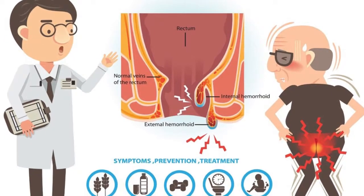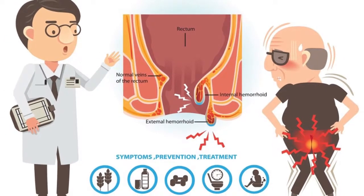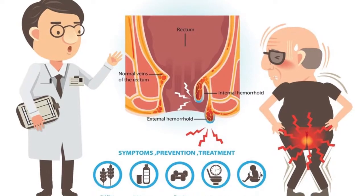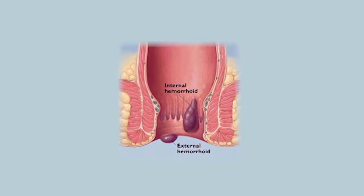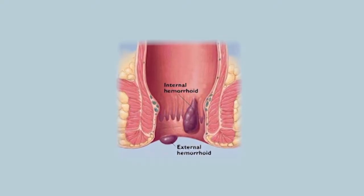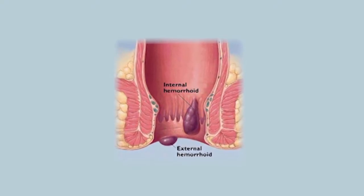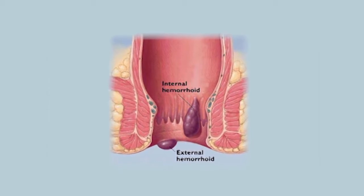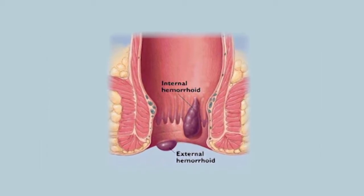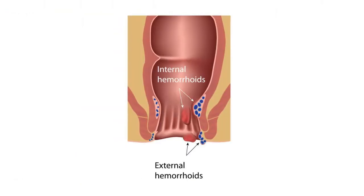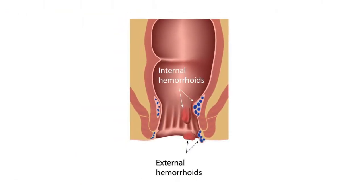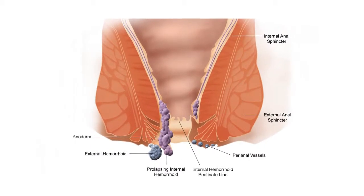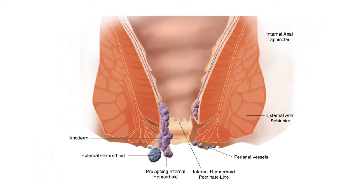Sometimes hemorrhoids swell when the veins enlarge and their walls become stretched, thin, and irritated by passing stool. Hemorrhoids are classified into two general categories: internal, originating in the rectum, and external, originating in the anus.